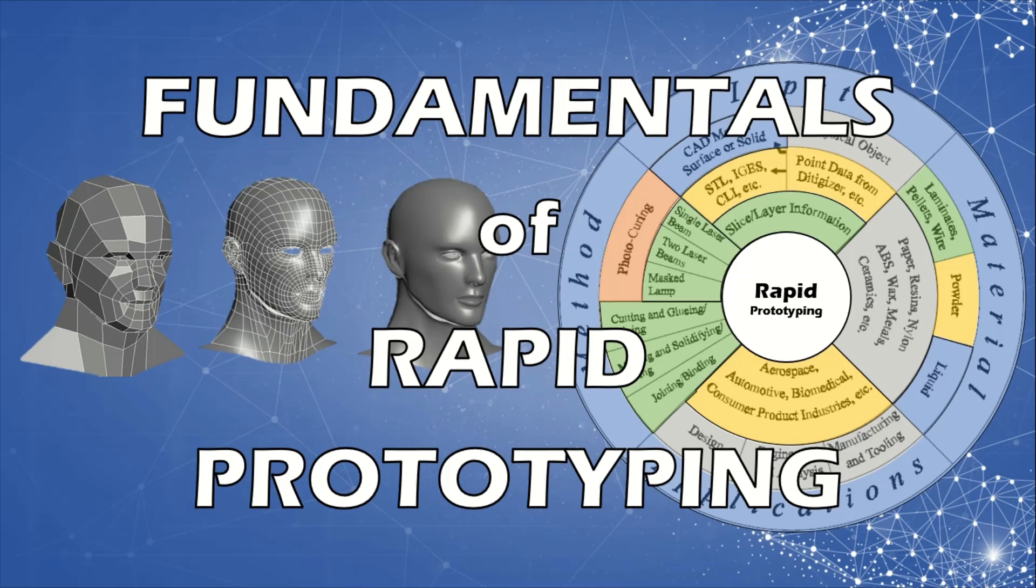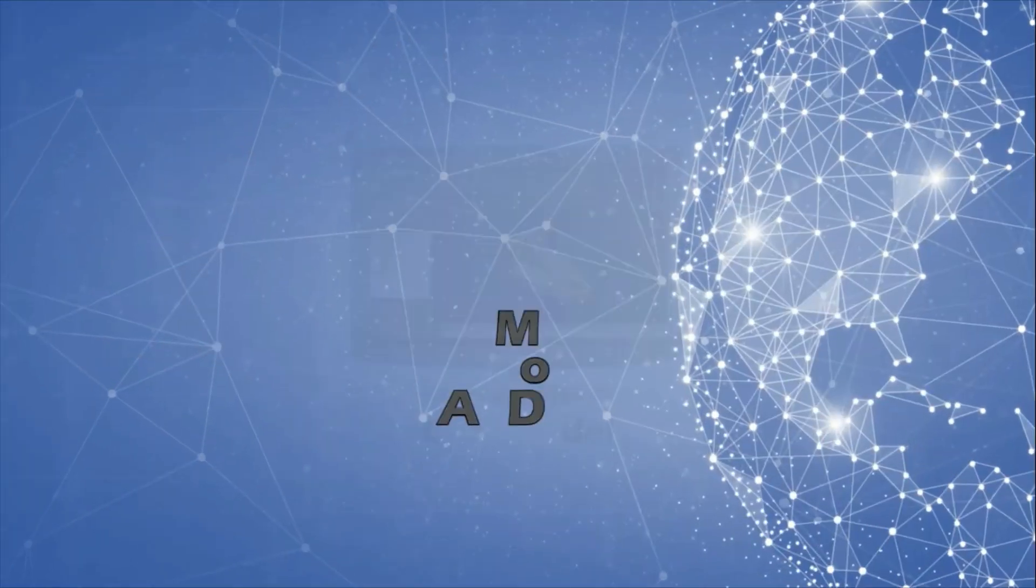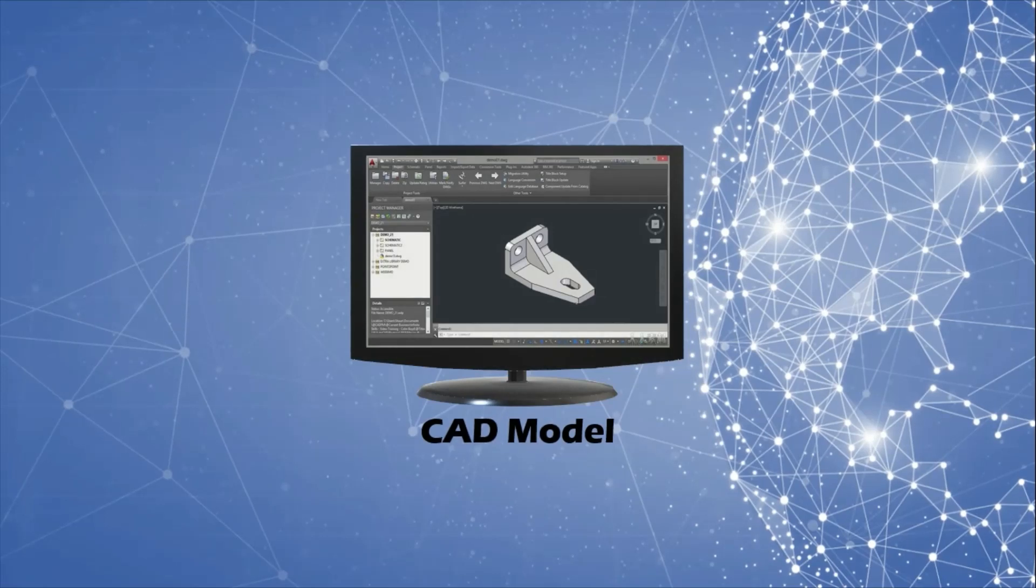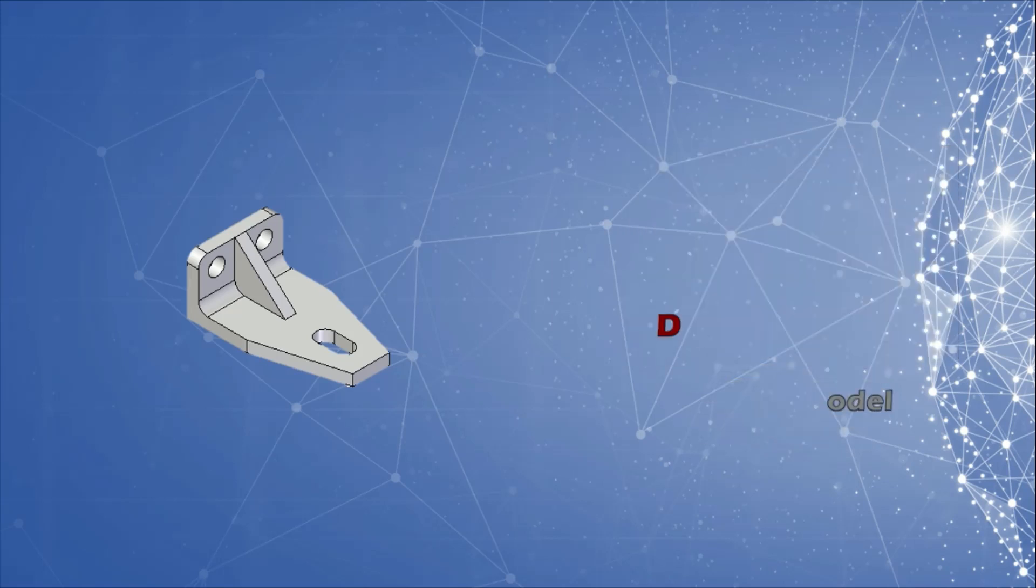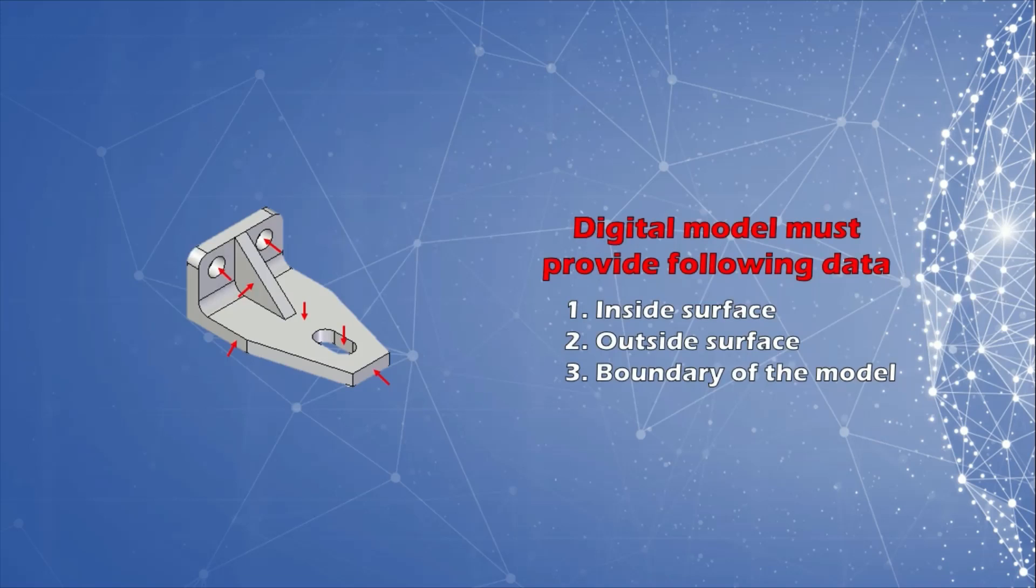Fundamentals of rapid prototyping. All types of rapid prototyping techniques adopt the same basic approach. First, a component is modeled on a CAD/CAM system. The computer model which represents the physical component to be built must be a closed surface which unambiguously defines an enclosed volume. This means that the data must specify the inside surface, outside surface, and boundary of the model.